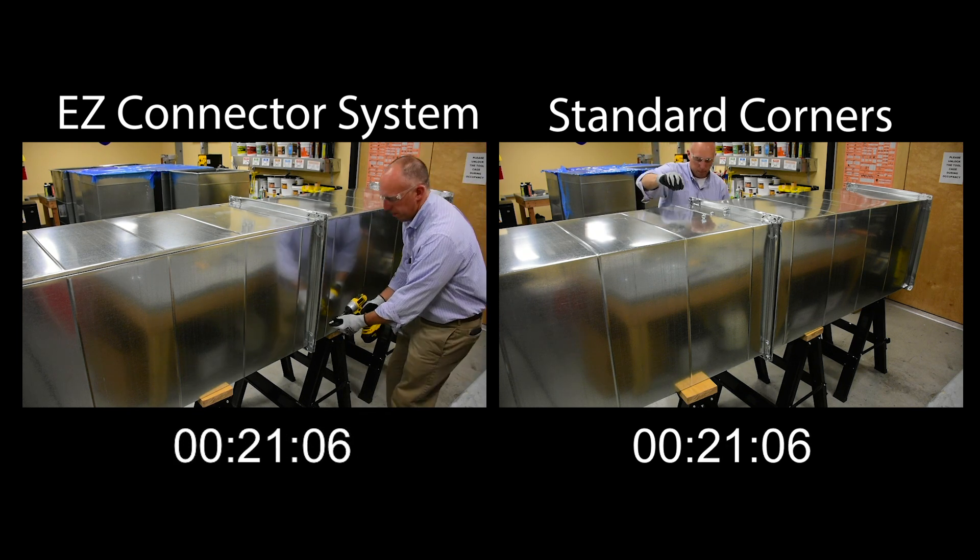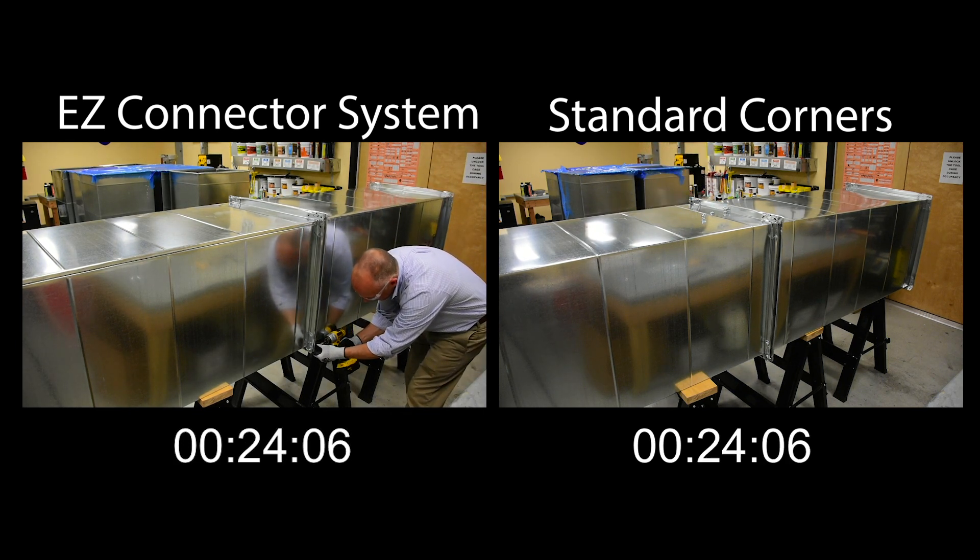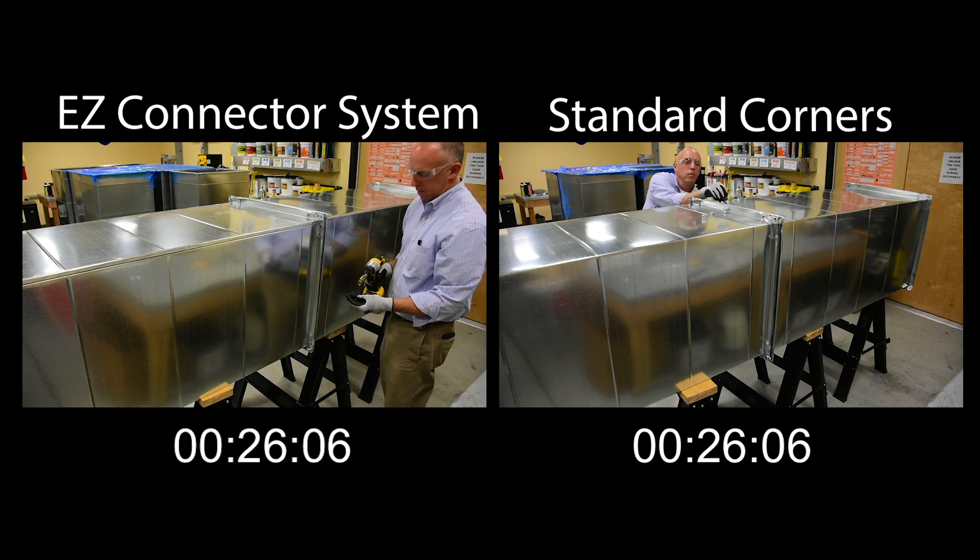The Easy Connector system includes a corner with a padded locking teardrop hole and a padded bolt with a built-in washer.